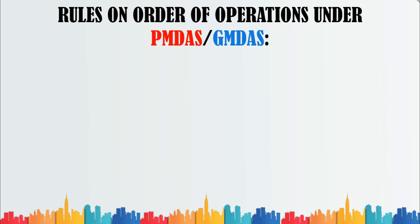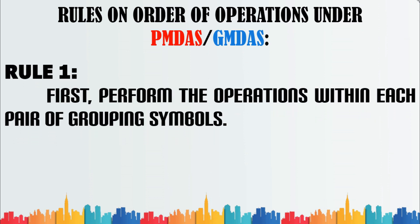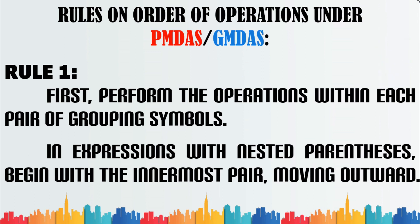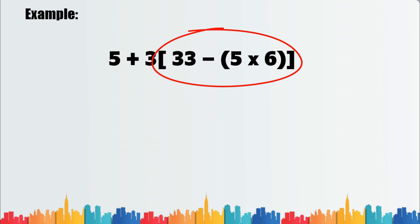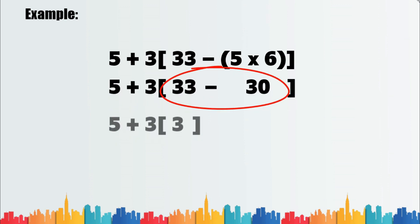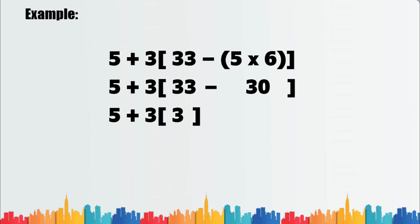Rules on order of operations under PEMDAS or GEMDAS. Rule number one: first, perform the operations within each pair of grouping symbols. In expressions with nested parentheses, begin with the innermost pair moving outward. Example: since we have expressions nested in parentheses, we begin with the innermost pair, which is 5 times 6. Then we subtract 30 from 33, then multiply 3 and 3, then add 5 and 9. The answer is 14.